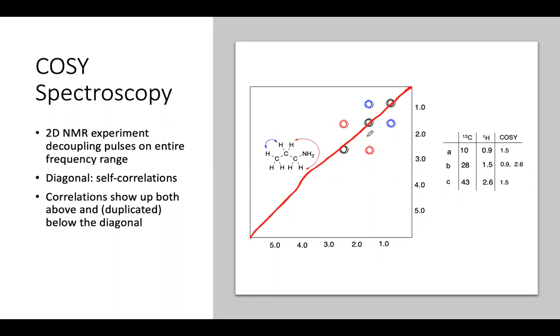But what we want are these red and blue peaks, because those tell us who's actually coupled to each other. So I can march through and say this peak at, if we go through the proton NMR here, 0.9, that's this one, is coupled to a peak at 1.5. And because you can connect them. And this peak at 1.5 is connected over to the peak at 2.6.